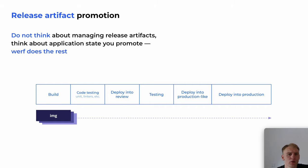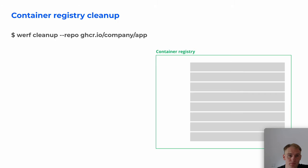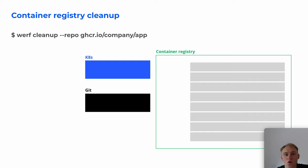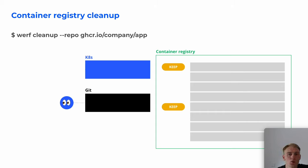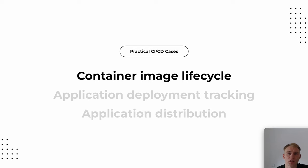But why shouldn't users think about it? Because Werf can manage the whole container image life cycle. Here we briefly look at our approach to cleaning out the container registry. Werf offers its own approach to cleaning, which takes into account images currently in use in Kubernetes, and ones that are somehow related to developers' ongoing activities based on Git. When cleaning, Werf scans all used images in Kubernetes and ignores them. Werf also knows what images were used on which commits and ignores them according to the user's selected keep policies. The rest are removed.